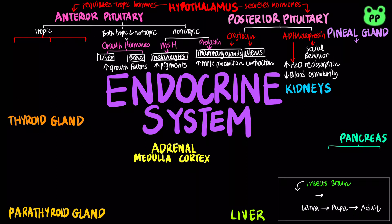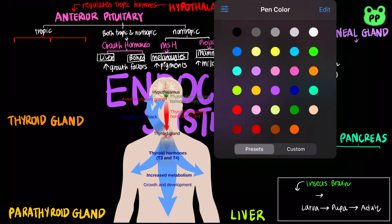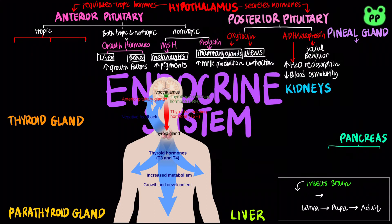The anterior pituitary secretes four strictly tropic hormones, all regulated by hypothalamus hormones. When the body feels cold, sensory neurons in the hypothalamus trigger it to secrete thyrotropin-releasing hormone, or TRH, which in turn stimulates the anterior pituitary to secrete thyroid-stimulating hormone, or TSH.